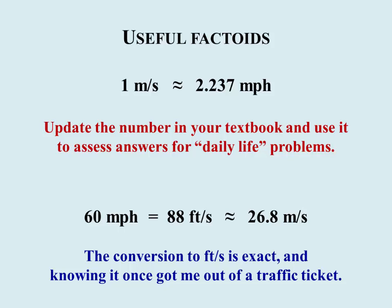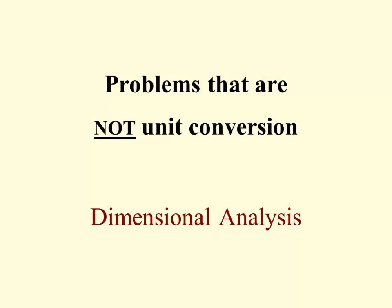And finally, there's also an exact conversion in the foot second unit system. And that 60 miles per hour is exactly 88 feet per second, and therefore approximately 26.8 meters per second. And I'll just mention in passing, if you ever want to hear the story, knowing that conversion factor to feet per second once got me out of a traffic ticket.